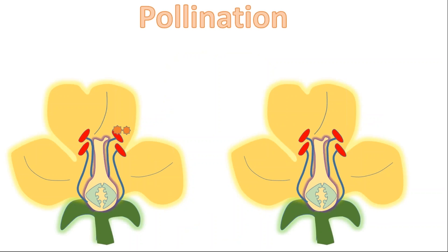What is pollination? Pollination is the movement of pollen grain from the anther to the stigma. If pollination takes place in the same flower, it is known as self-pollination. If pollination takes place in a different flower of the same or different plant, it is known as cross-pollination.